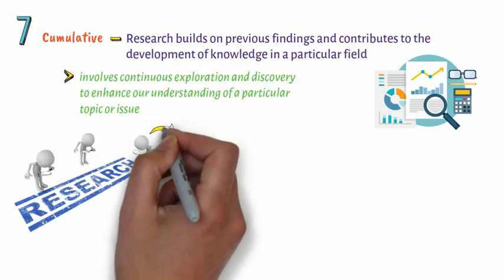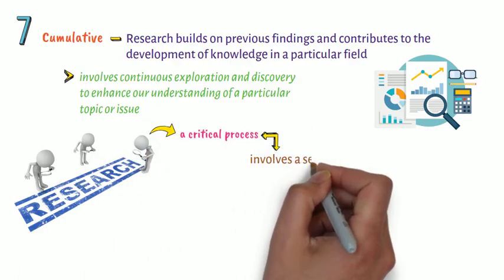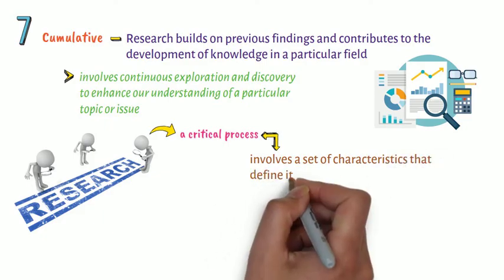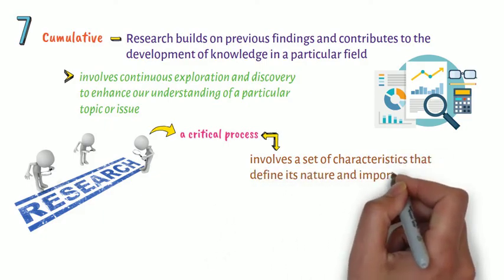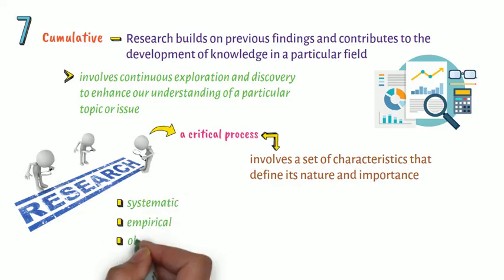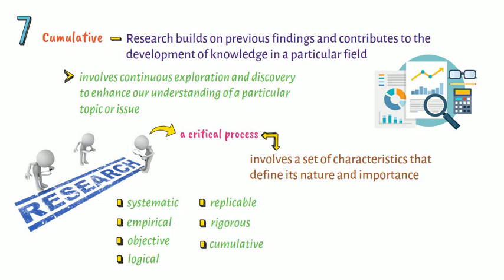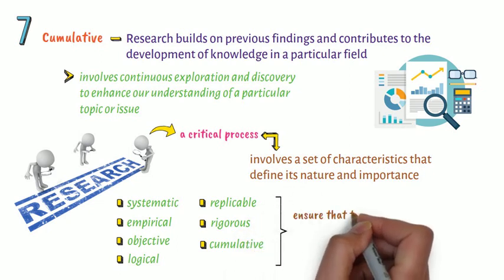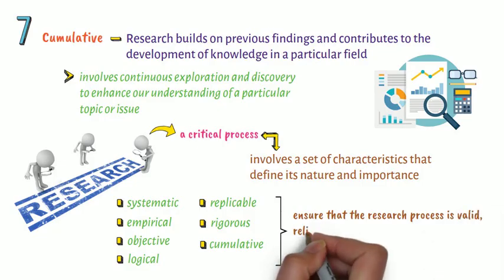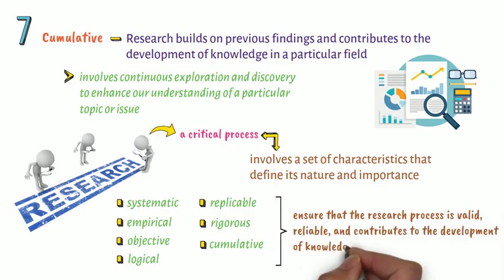In conclusion, research is a critical process that involves a set of characteristics that define its nature and importance. It is systematic, empirical, objective, logical, replicable, rigorous, and cumulative. These characteristics ensure that the research process is valid, reliable, and contributes to the development of knowledge in a particular field.